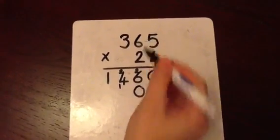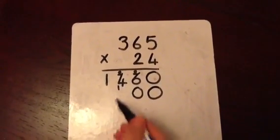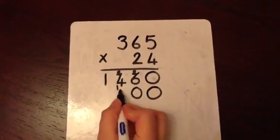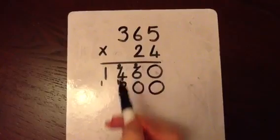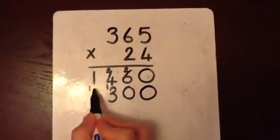2 multiplied by 6 is 12. And the 1 we've carried is 13. 2 multiplied by 3 is 6. And the 1 is 7.